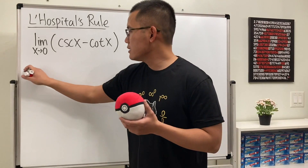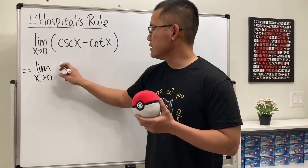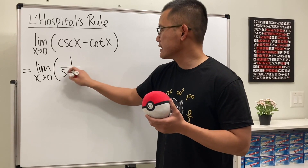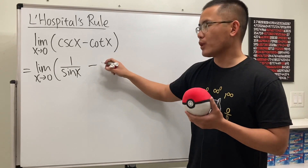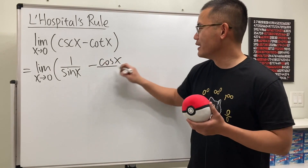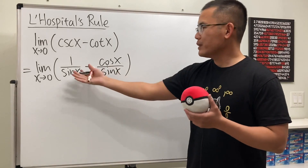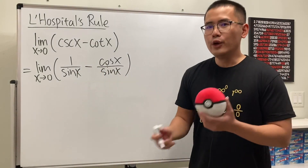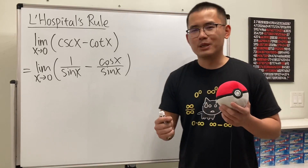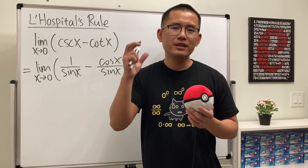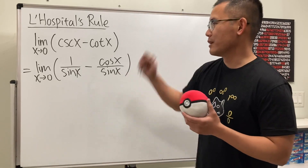So this is going to be the limit as x approaching 0, and this is just 1 over sin x, and this is just cosine x over sin x. We can put them together as a fraction. We prefer to see fractions when we are taking limits, because for L'Hôpital's rule, we want either 0 over 0, or infinity over infinity, to use L'Hôpital's rule.